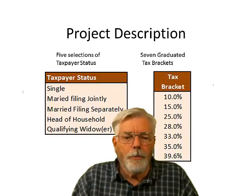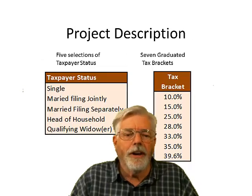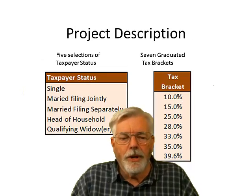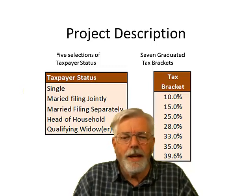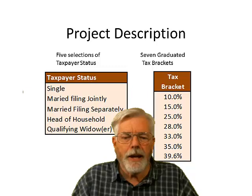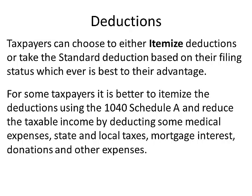There are five selections of taxpayer status: single, married filing jointly, married filing separately, head of household, and qualifying widow or widower. There are seven graduated tax brackets going from 10% all the way up to 39.6%. For deductions, you can choose to either itemize using Schedule A or take the standard deduction based on filing status — whichever is best for your advantage.